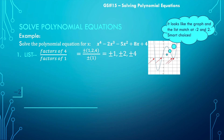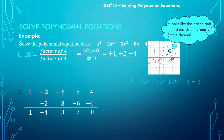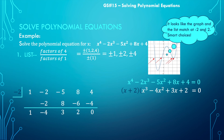Here are my coefficients — let's use synthetic division with -2. Bring down 1, multiply by -2 to get -2, add to get -4, multiply by -2 to get +8, add to -5 to get 3, multiply by -2 to get -6, add to 8 to get 2, multiply by -2 to get -4, giving a remainder of 0. So I can write my equation in factored form as (x + 2) times a cubic: x³ - 4x² + 3x + 2. But I need to reduce the cubic further.